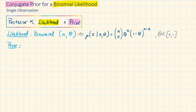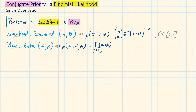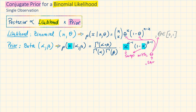So let's choose our prior to be the beta distribution with parameters alpha and beta. We can write the distribution as follows: the probability of theta given alpha and beta is equal to gamma of alpha plus beta, over gamma of alpha times gamma of beta, times theta to the power of alpha minus 1, times 1 minus theta to the power of beta minus 1.